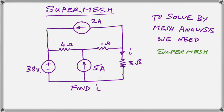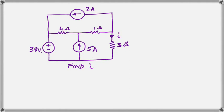Now what about this circuit? We're supposed to find the current I, which is shown there going through the 3 ohm resistor on the right. If we want to solve this by mesh analysis, we're going to need a super mesh. So what is a super mesh? Well, let's see what a super mesh is.